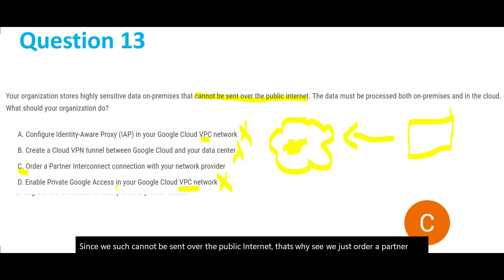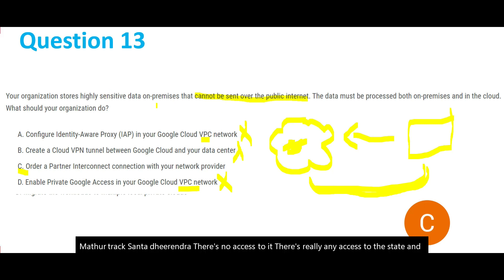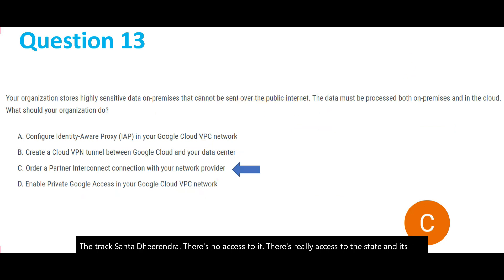A Partner Interconnect connection is basically a direct connection, like physical wires or pipes, that directly send the data without going over the public internet. There is rarely any access to this data and it is very secure. It prevents access to the highly sensitive data and it is not over the internet. So C is the answer for question 13.